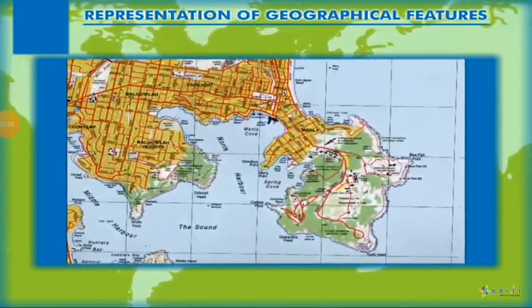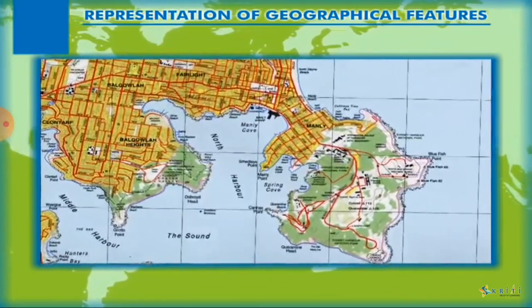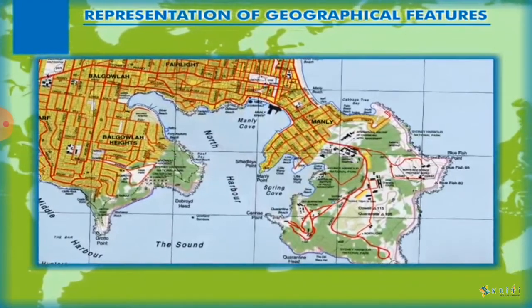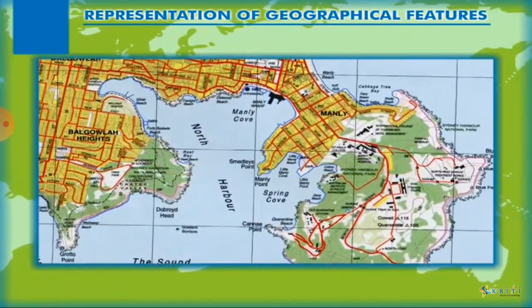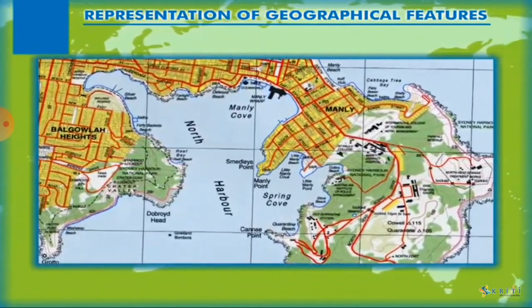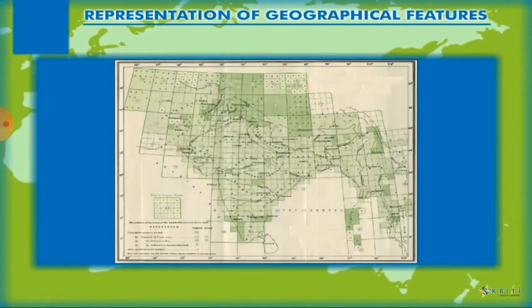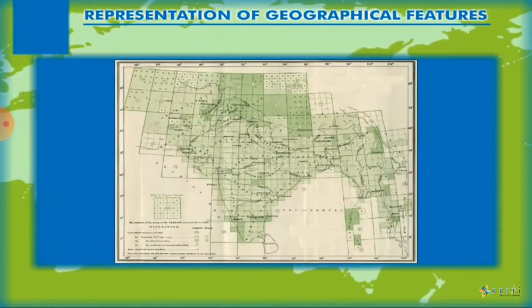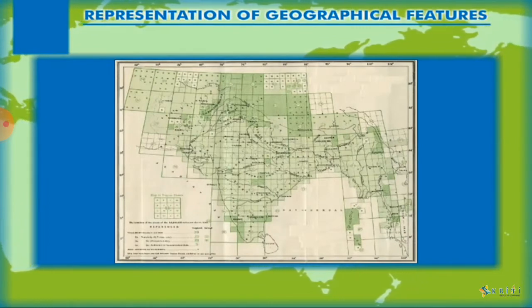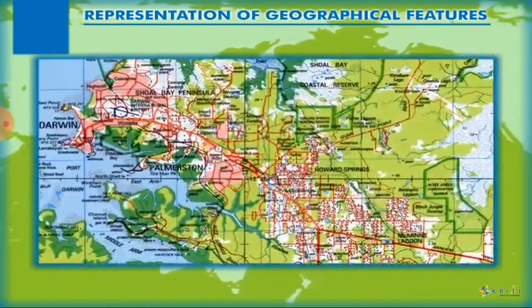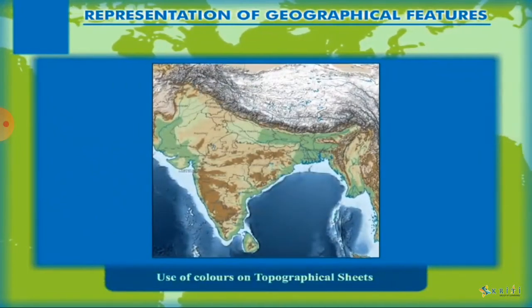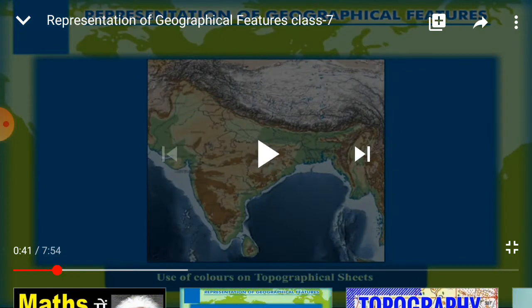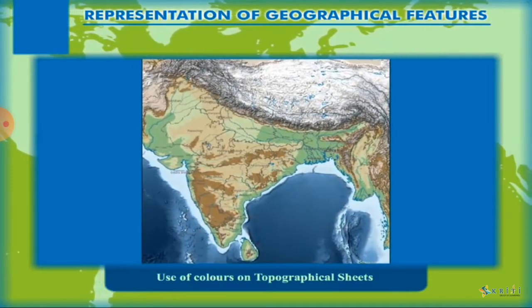A topographic map or topographical sheet is a type of map characterized by large-scale detail and quantitative representation of relief, usually using contour lines. Topographic maps show both natural and man-made features. The topographical map is part of a published map series; there are two combined sheets which cover the whole map, with some natural and some man-made features represented with the help of color.